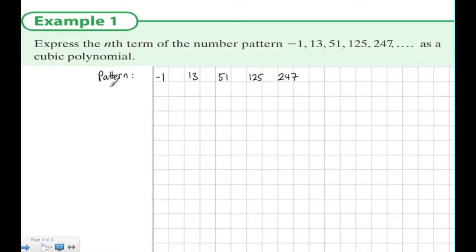We're writing out the pattern first, and then we write out the first difference. The difference between 13 and -1 is 14, 51 and 13 is 38, and we get 74 and 122.